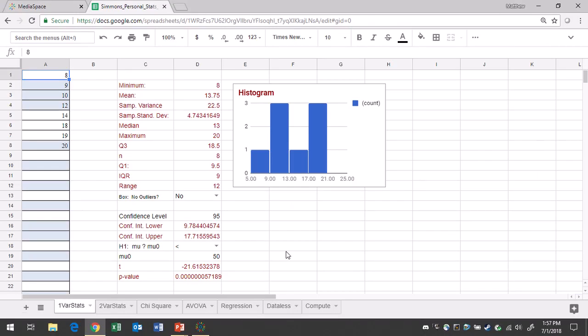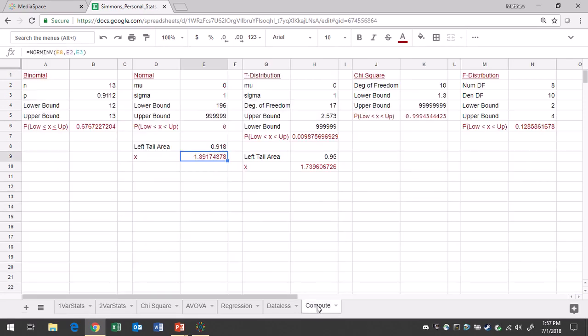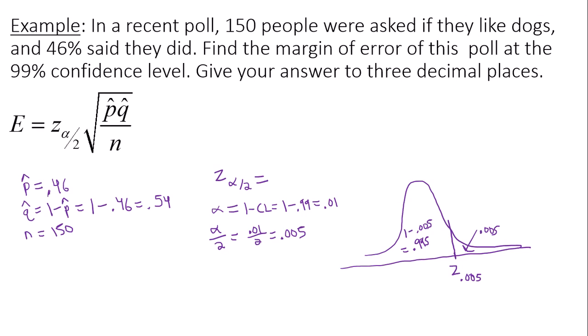In Google Sheets, to find critical values, go to the compute tab, go to the normal area. We're dealing with z-scores, so the mean is 0, standard deviation is 1. The area to the left, or the left tail area, in this case, is going to be 0.995. Gives me a z-score of about 2.576.